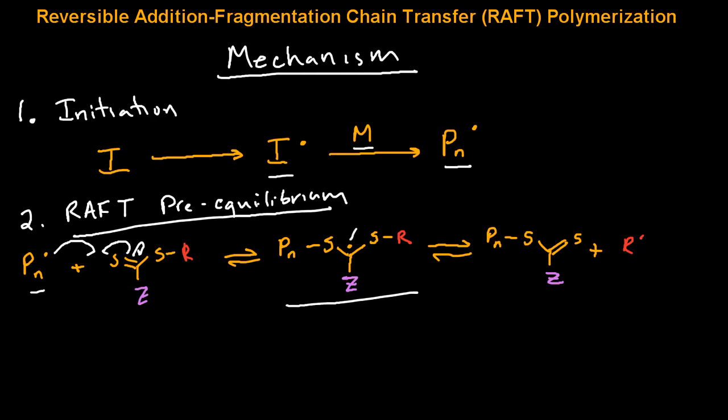What can happen next is this radical will combine from electron from the sulfur-R group bond to form the thiocarbonyl again, and then kick off the R group, where now you have a RAFT agent with one of those initial polymer species and an R group radical, which can go on to initiate and form new polymer chains. The next step is re-initiation.